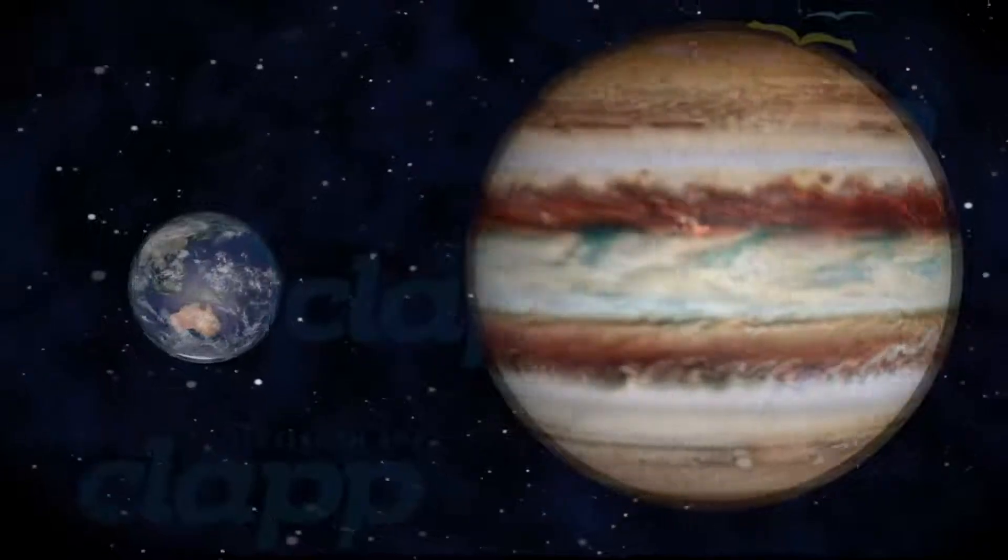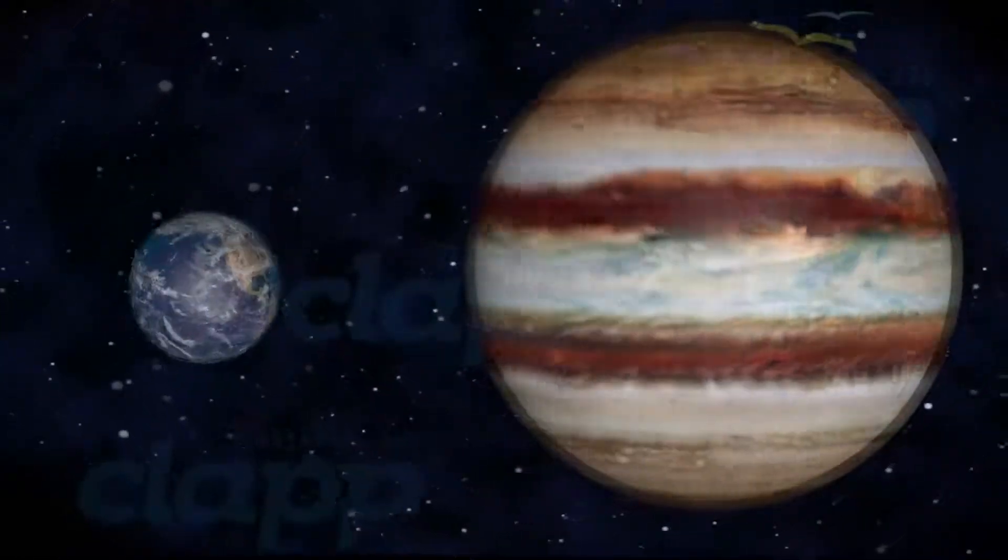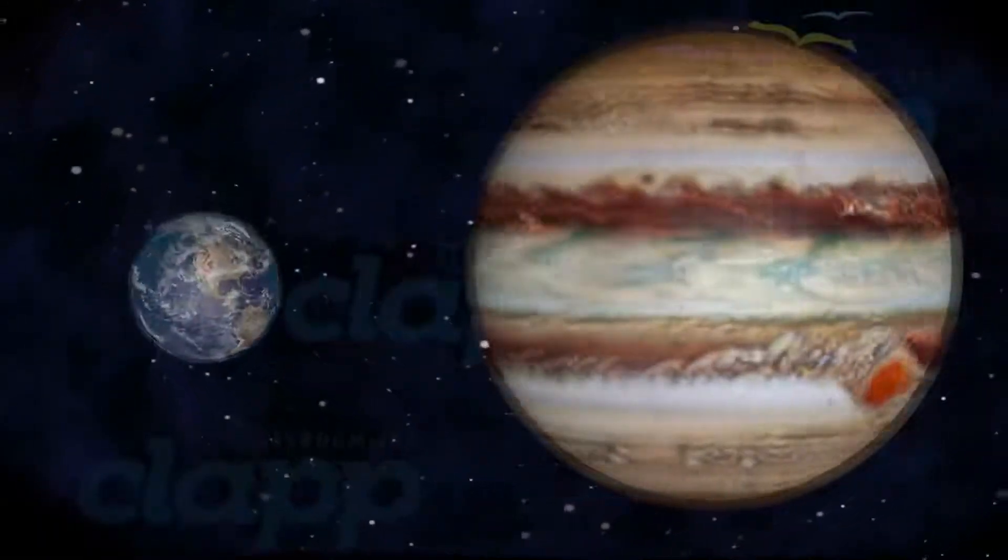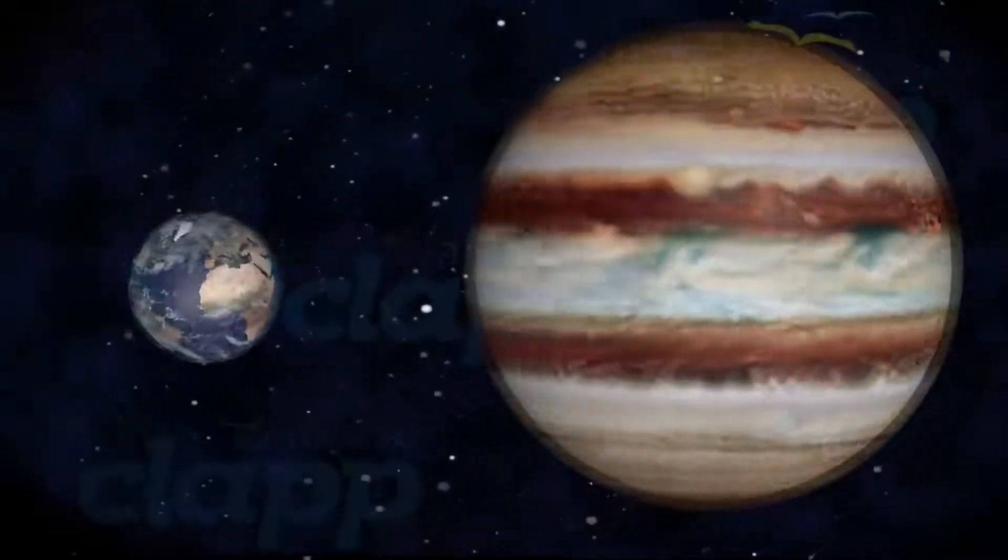Jupiter is much larger than Earth and considerably less dense. It has 1,321 times the volume of Earth but only 318 times the mass.